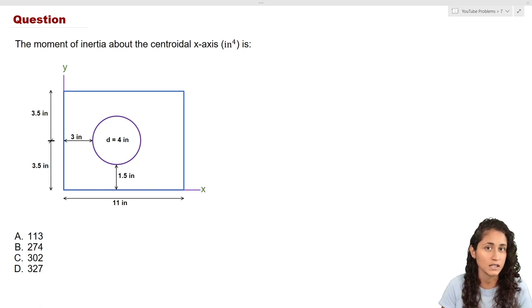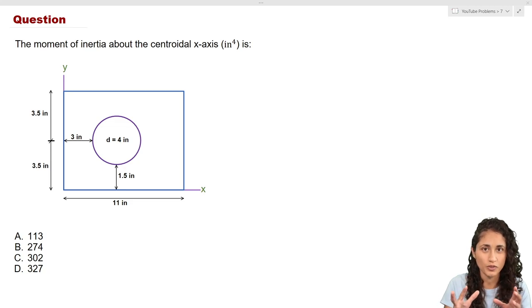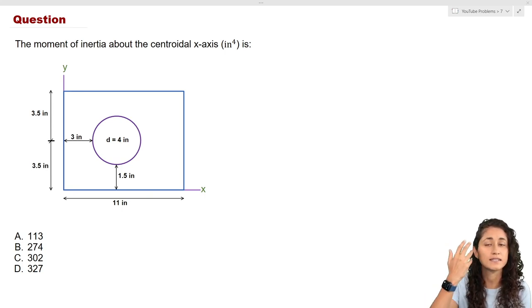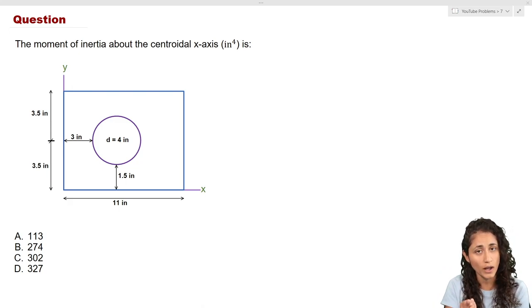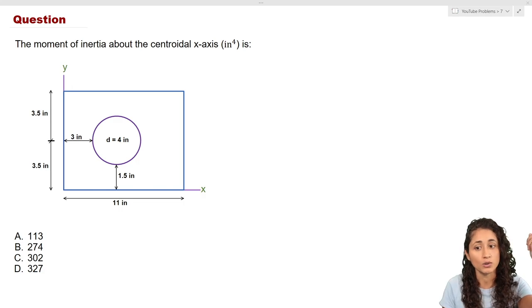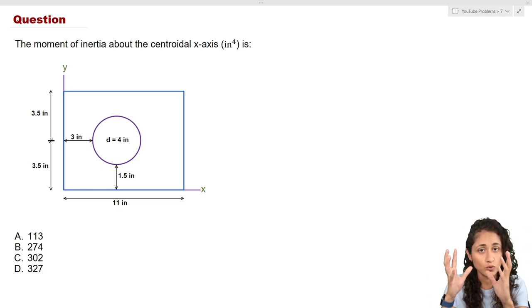This is important for your FE exam or if you're taking a statics course. The way we're going to solve this problem is as follows: the first thing you need to do is use the parallel axis theorem. When using the parallel axis theorem, you must first find the centroid. We've already found the centroid about the x and y-axis for this problem — if you haven't checked that video yet, I recommend doing that first and then coming back.